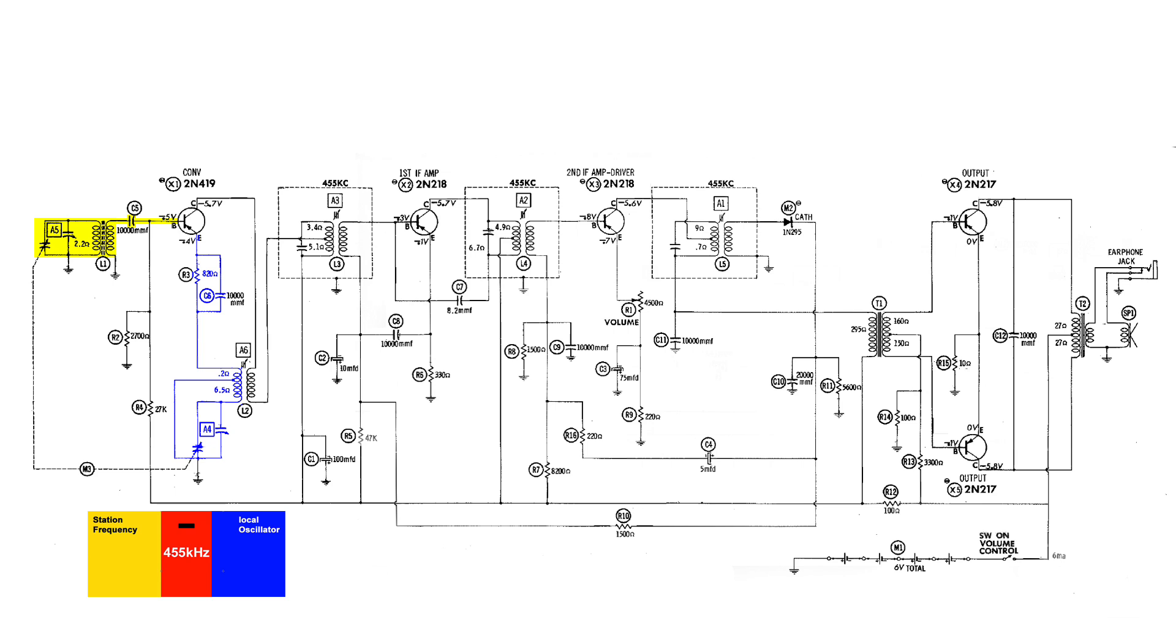As we saw in the video, when we subtract the two frequencies we're going to end up with 455 kilohertz, and that is the output of this first transistor.